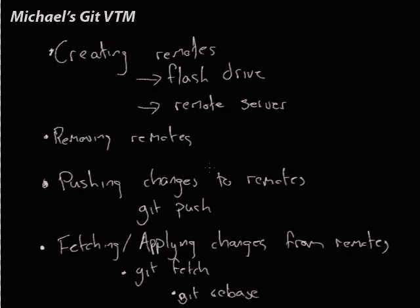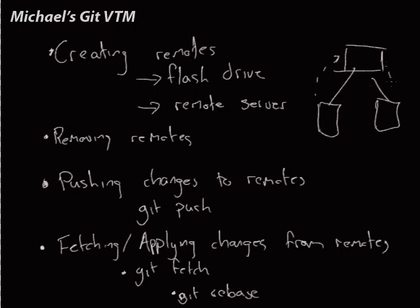This amount of information from these three videos is the basic information you need to work with multiple developers using git as your version control system. This is the typical central server model — developers push changes, others fetch and rebase to apply those changes, and it works vice versa. This is the equivalent of how Subversion does it but in the git way. Commits are always local, which is a good thing because we can commit more often with less chance of failure, and then push when we're ready.